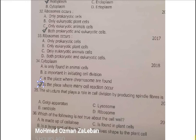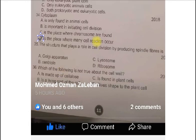Next question is. The structure that plays a role in cell division by producing spindle fibers is A. Golgi apparatus, B. Centriole, C. Lysosome and D. Option is Ribosome. Here the correct one is the B. Which is the centriole.